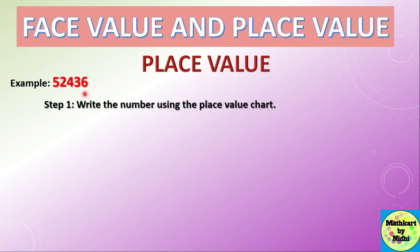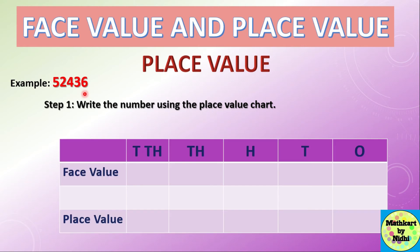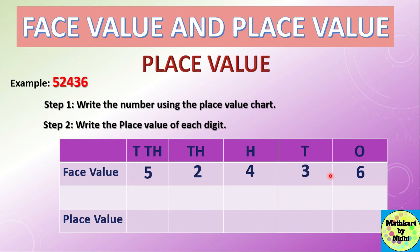Let us see one more example with a five-digit number. Writing the number in the place value chart: 6 in the ones column, 3 in the tens column, 4 in the hundreds column, 2 in the thousands column, and 5 in the ten thousands column. The second step is to write the place value of each digit. 6 ones = 6, and 3 tens = 30.